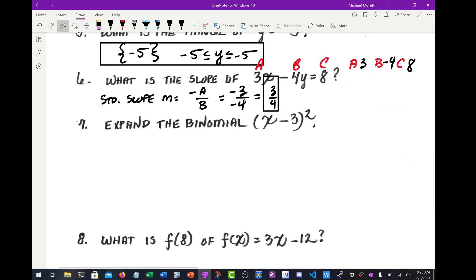Moving on to number 7, expand the binomial. So this is kind of the term that probably confuses people. What does this mean, expand? I'll show you. You just take X minus 3 and multiply it by itself. So it's X minus 3 times X minus 3.